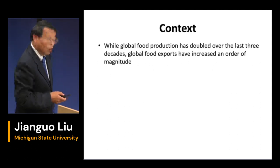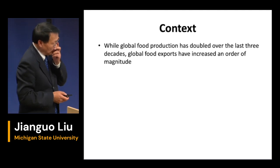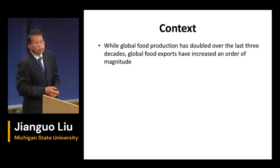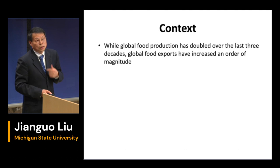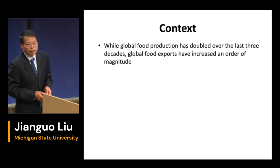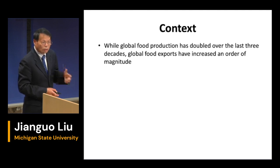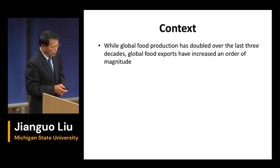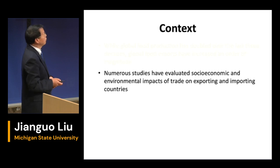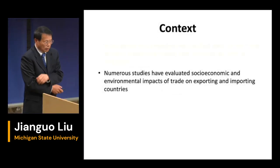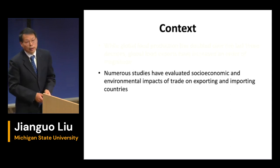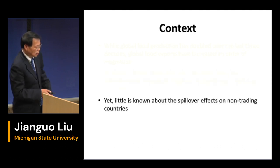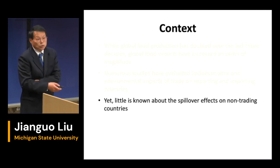As we all know, global food production has doubled in the last three decades, but global food export has increased an order of magnitude. That means export is growing much faster than food production, which illustrates the huge importance of export issues. Many studies have evaluated the socioeconomic and environmental impacts of trade on exporting and importing countries, but little is known about spillover effects on non-trading countries.